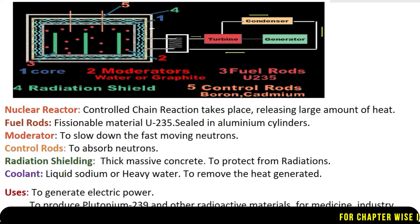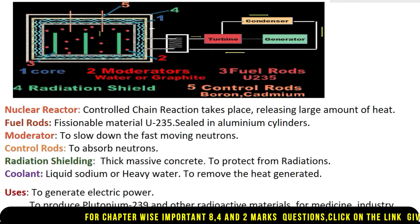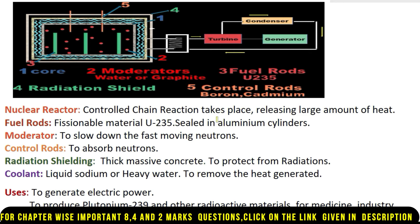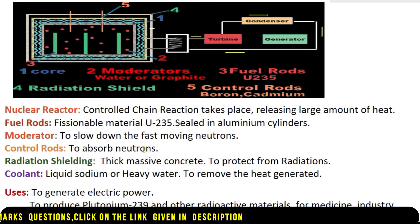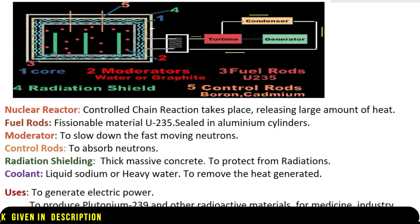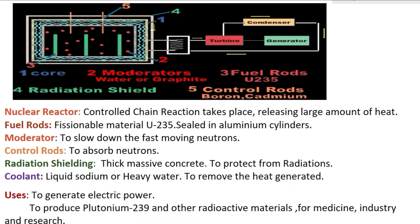Next is the coolant. Generally, liquid sodium or heavy water is used as coolant. This coolant is used to remove the heat generated from the core. These rods are called control rods. Control rods are made up of boron or cadmium, and they are used to absorb neutrons. The core and coolant are covered by a radiation shielding, which is made up of thick, massive concrete and is used to protect from radiations generated from the core.